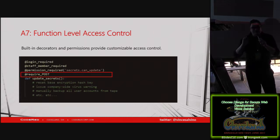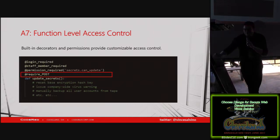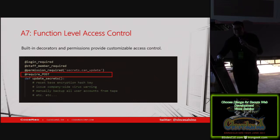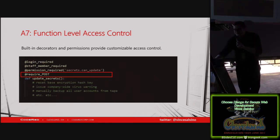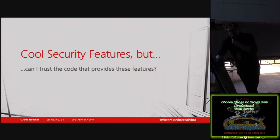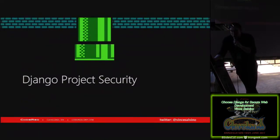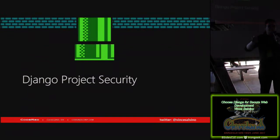This last one is require_POST — that's just an HTTP restriction. If you GET that URL — just navigate to it in your browser — it just won't work; you have to POST to it. If the user fulfills all of those requirements, they'll be able to hit that function. Functional level access control has probably hundreds of these decorators in Django — everything from network restrictions and host name restrictions to user permissions. These are some really cool security features, but can I trust them? Can I trust the code that gives me these features? Let's dive in and find out.